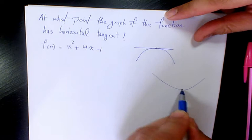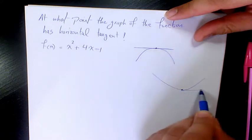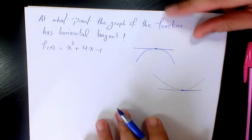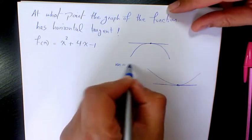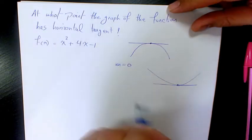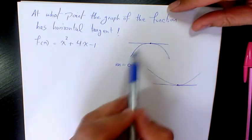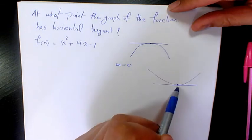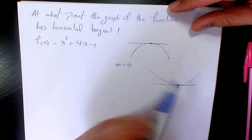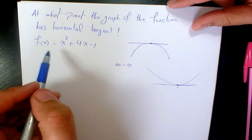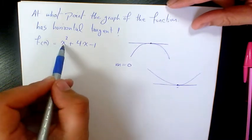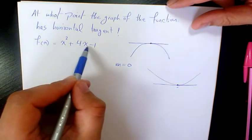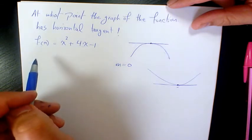A horizontal tangent means that the slope is 0, and we are dealing with a maximum point or minimum — local minimum or local maximum. So let's do this example: f(x) = x² + 4x - 1. We need to find out at what point the graph of this function has a horizontal tangent.